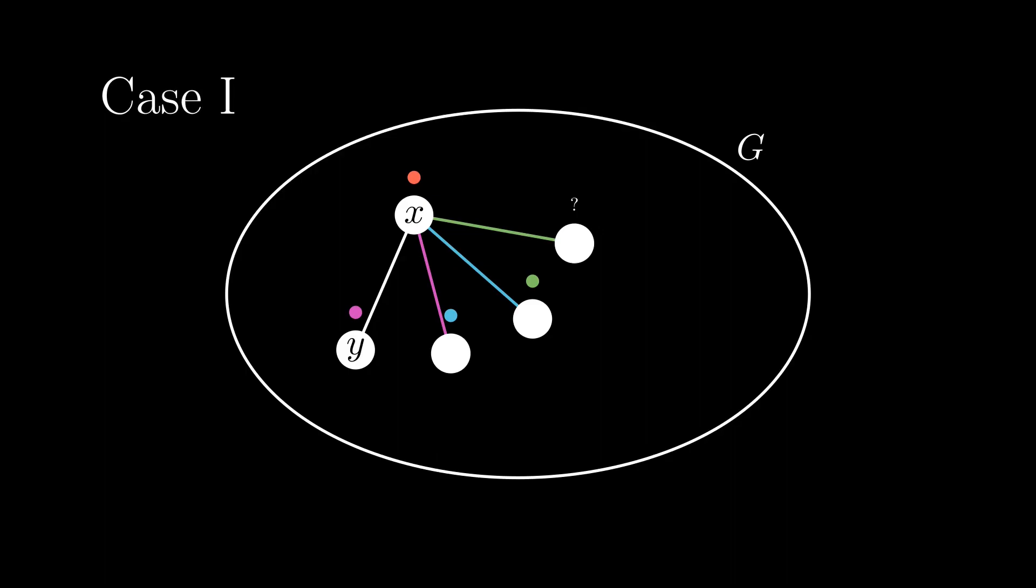Case 1 is that the free color of the last vertex in the chain is the free color of x. In this case, we'll go back the chain and change colors. This frees up the color for x that we needed to color (x, y) and we're done.